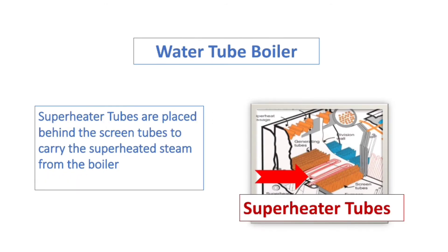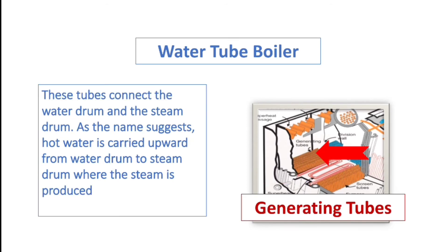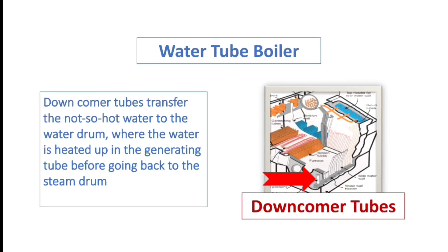Superheater tubes are placed behind the screen tubes to carry the superheated steam from the boiler. The generating tubes connect the water drum and steam drum; as the name suggests, hot water is carried upward from where the steam is produced. The downcomer tubes transfer the not-so-hot water to the water drum, where the water is heated up in the generating tube before going back to the steam drum.